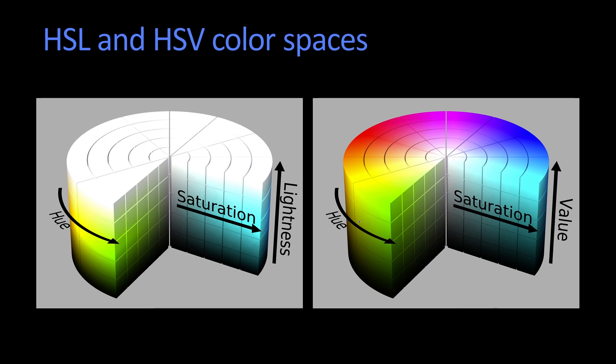These two can be drawn as sort of these thick cylinders. So down here, at the bottom, things are dark. Up at the top, things are light. In hue, saturation, and lightness, the whole top is white.